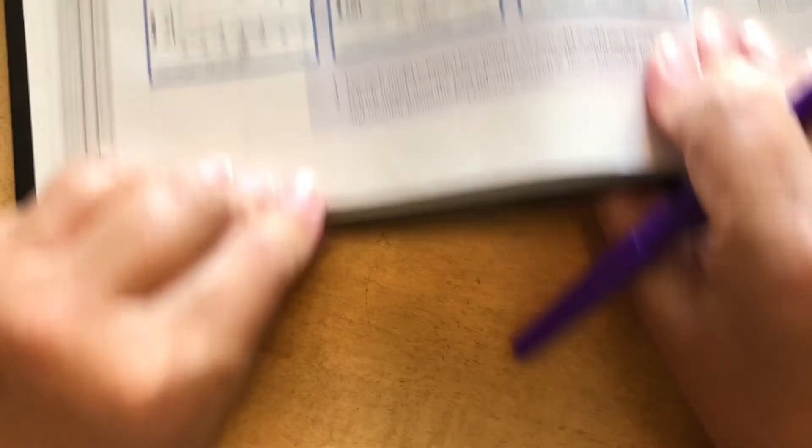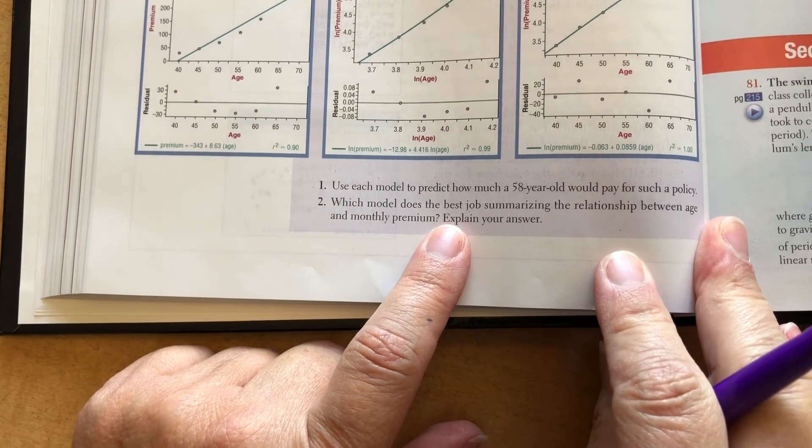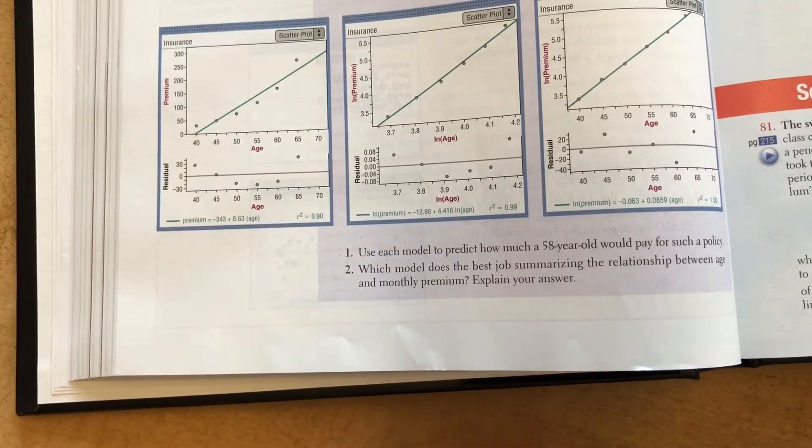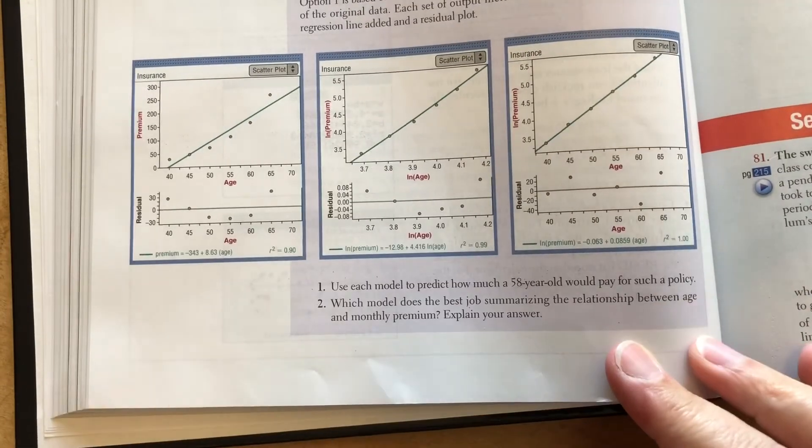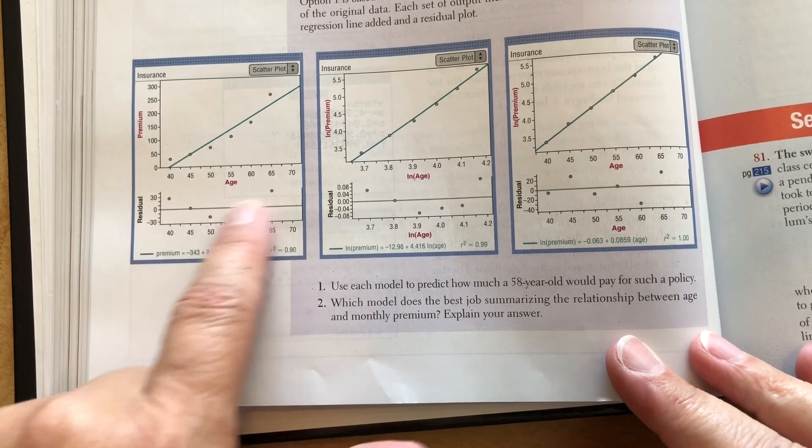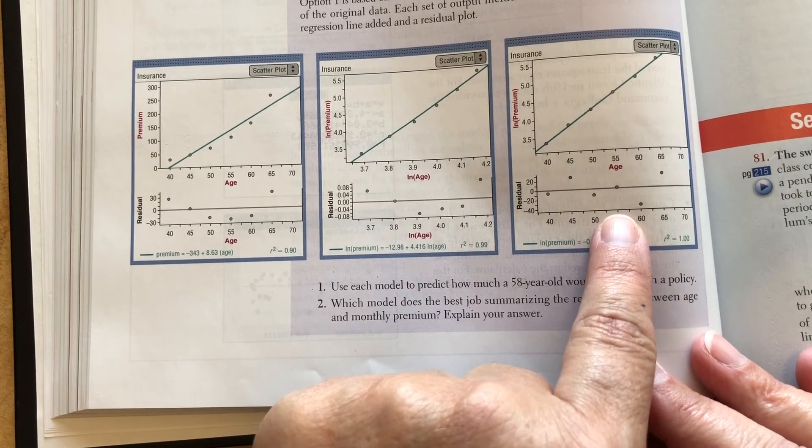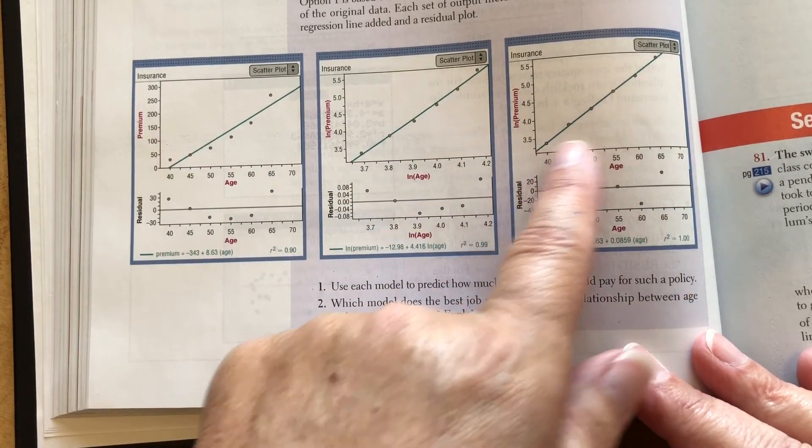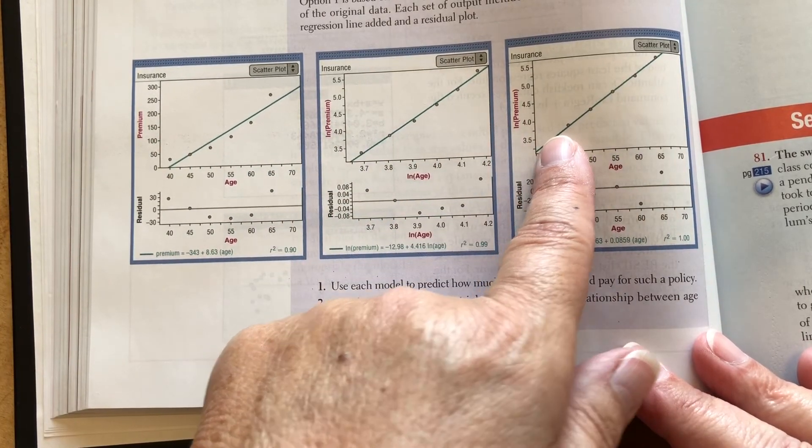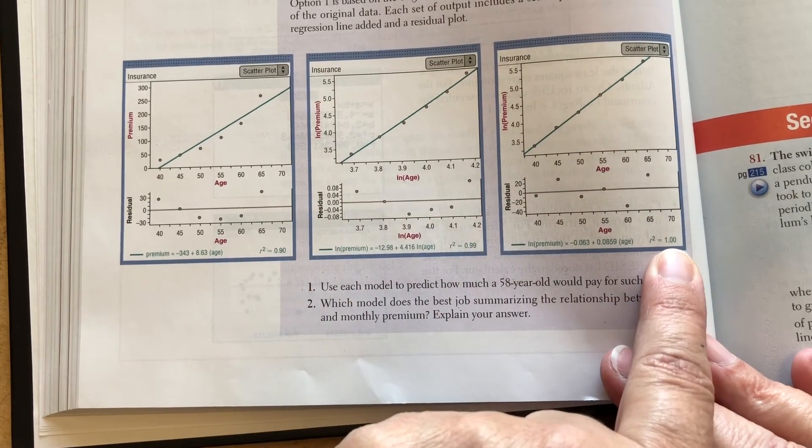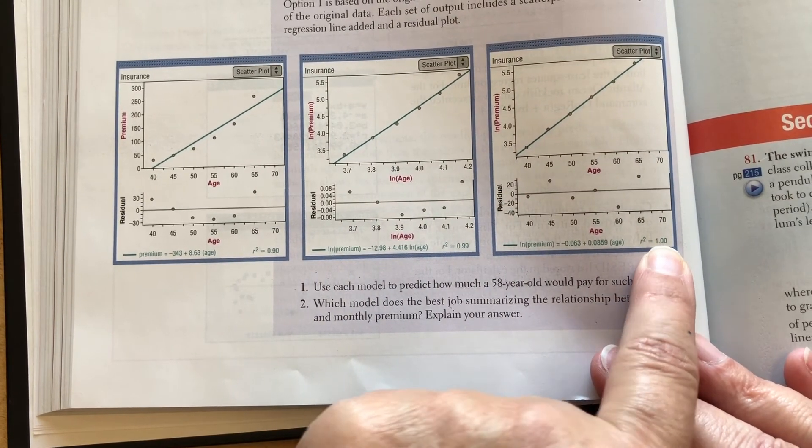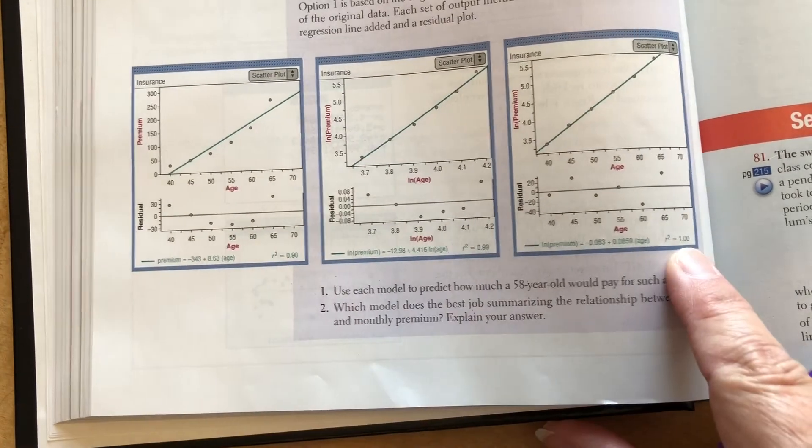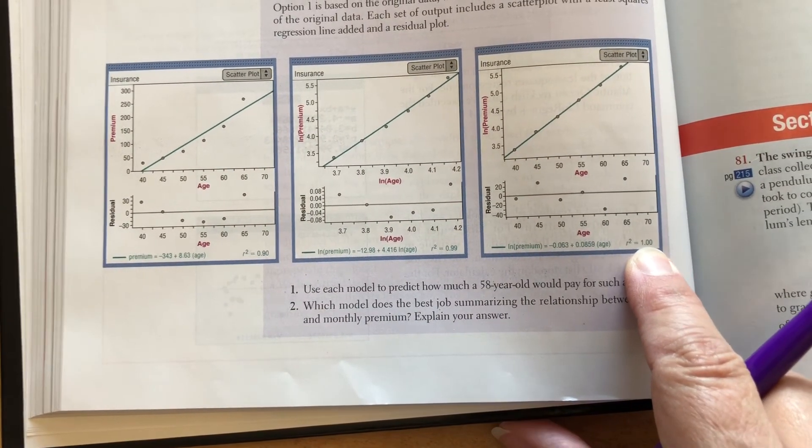So which model does the best job summarizing the relationship between age and monthly premium? Well, we kind of alluded to that when we were looking at the three models. Too much of a pattern in the residuals here. This is a nice residual. Plus, if you look at your scatter plot, this looks the most, has the strongest linear relationship or correlation. Well, if you look at it, it's got a correlation of 1.00. This correlation of 0.99 and 0.90, they're not bad. But boy, that is a whole lot better. That's perfect.